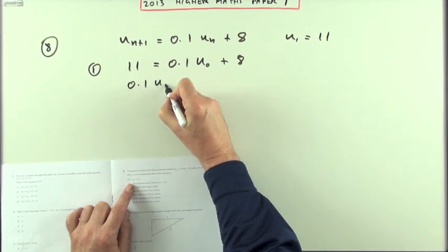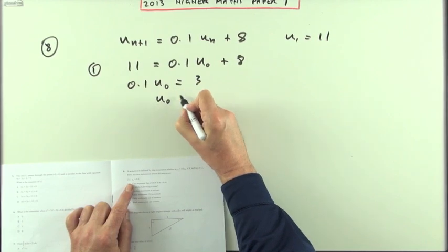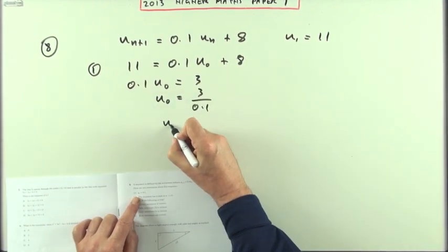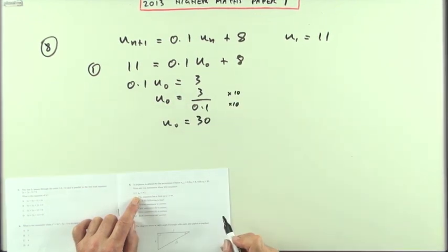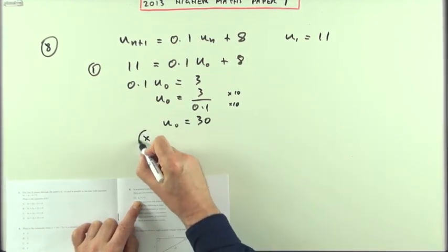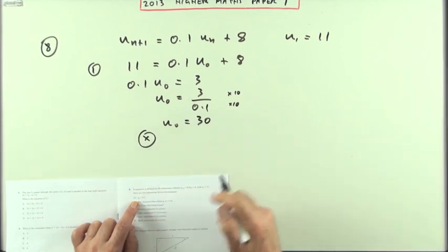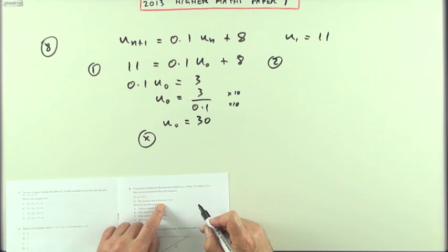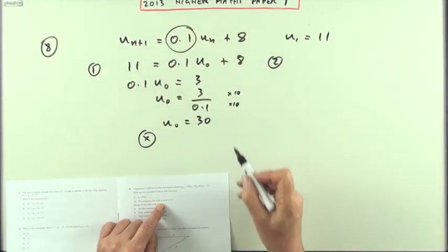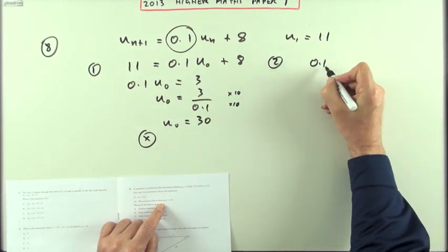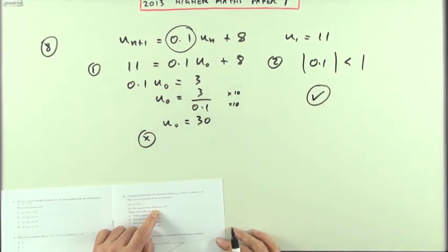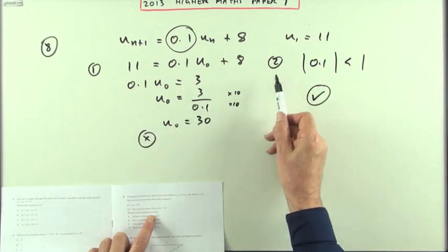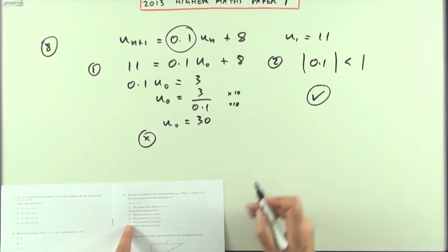Rearranging, 0.1 times U0 equals 11 minus 8, which is 3. So U0 equals 3 divided by 0.1. Multiply top and bottom by 10 and you get 30 over 1, so U0 is 30 — quite significantly different from 9.1. So that first statement is wrong. The second part says the sequence has a limit. Yes — the multiplying number, 0.1, is a proper fraction less than 1, which means the sequence does have a limit. So statement two is correct, and only statement two is correct — that would be answer C.